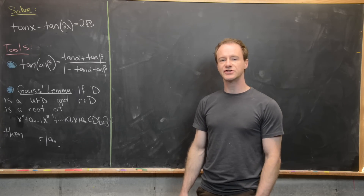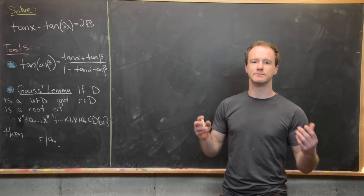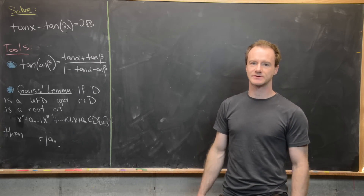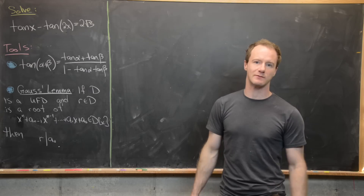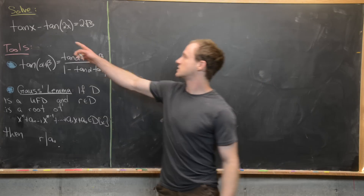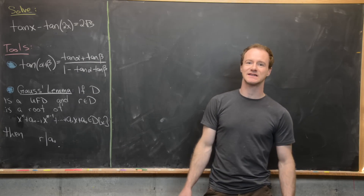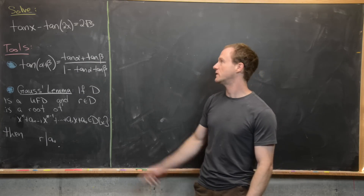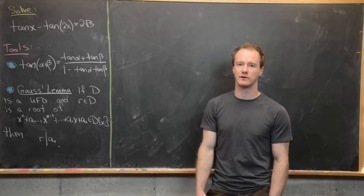In this video, we're going to solve an interesting trigonometric equation using some machinery from abstract algebra. We want to solve tangent of x minus tangent of 2x equals 2 times the square root of 3.